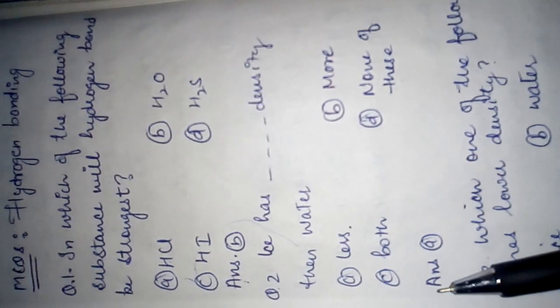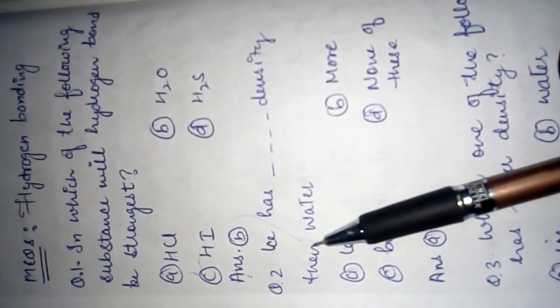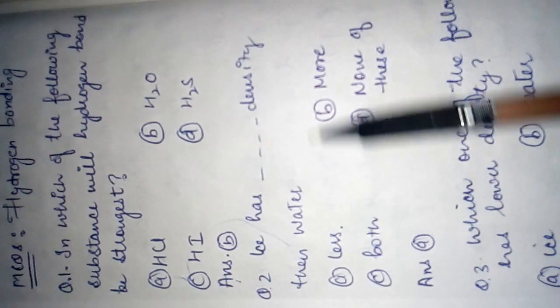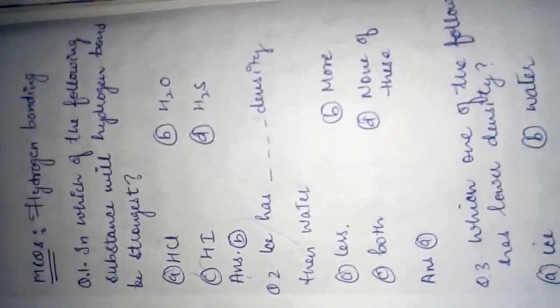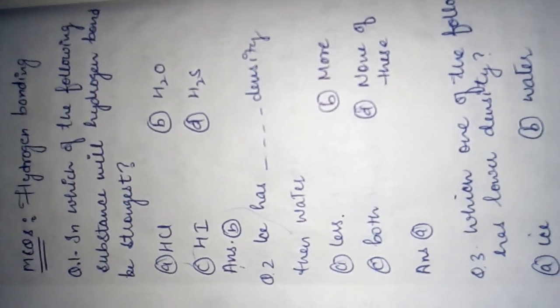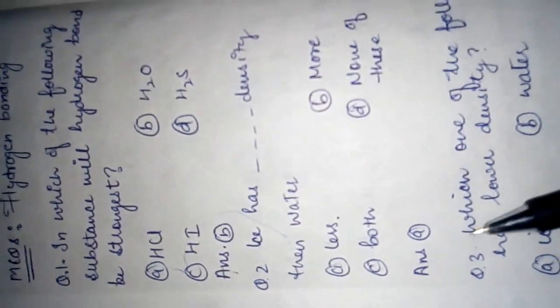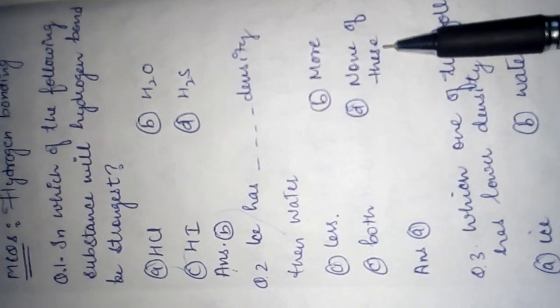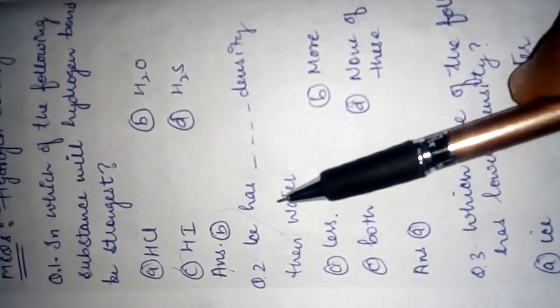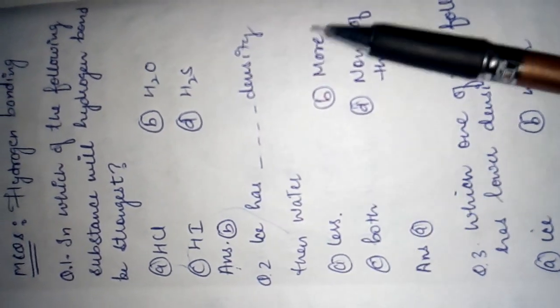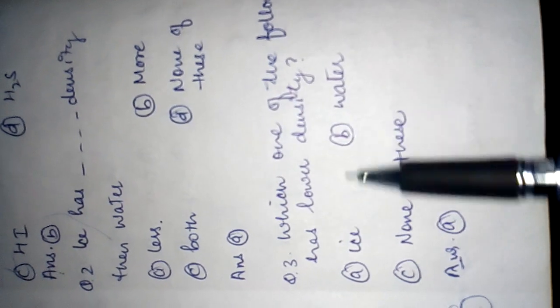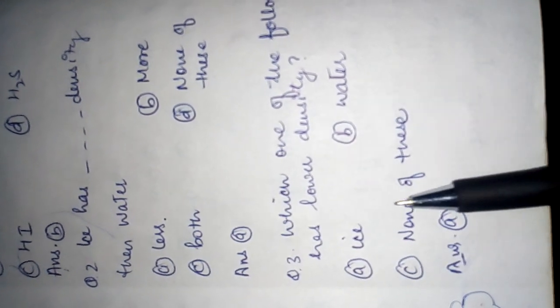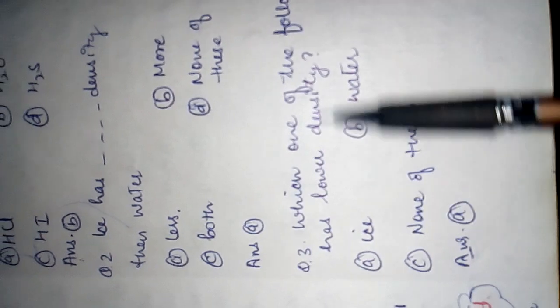Ice has ___ density than water. Options: less, more, both, none of these. As discussed, the answer is 'less.' Which one of the following has lower density — ice or water? As usual, the answer is ice.